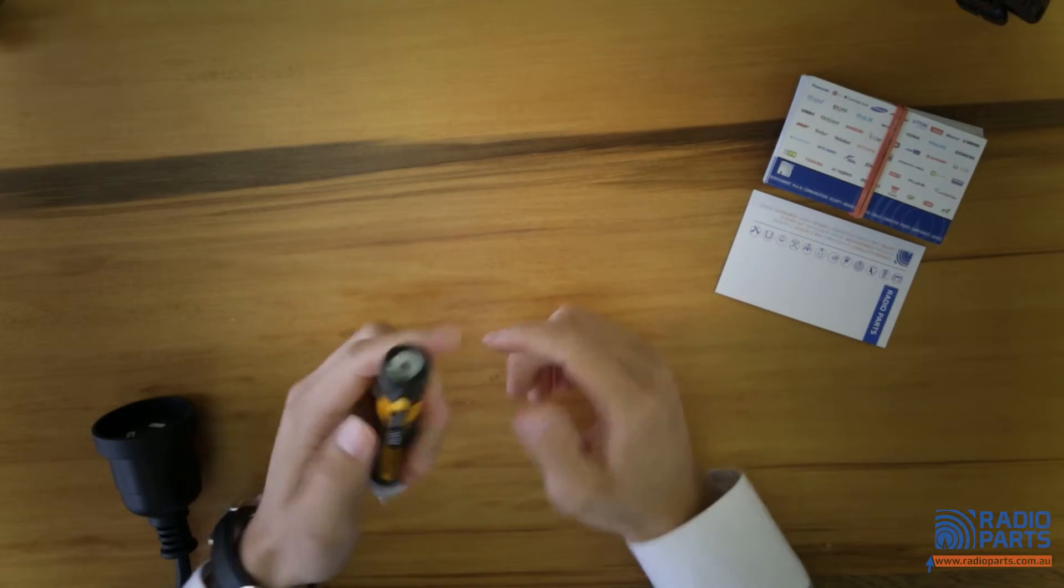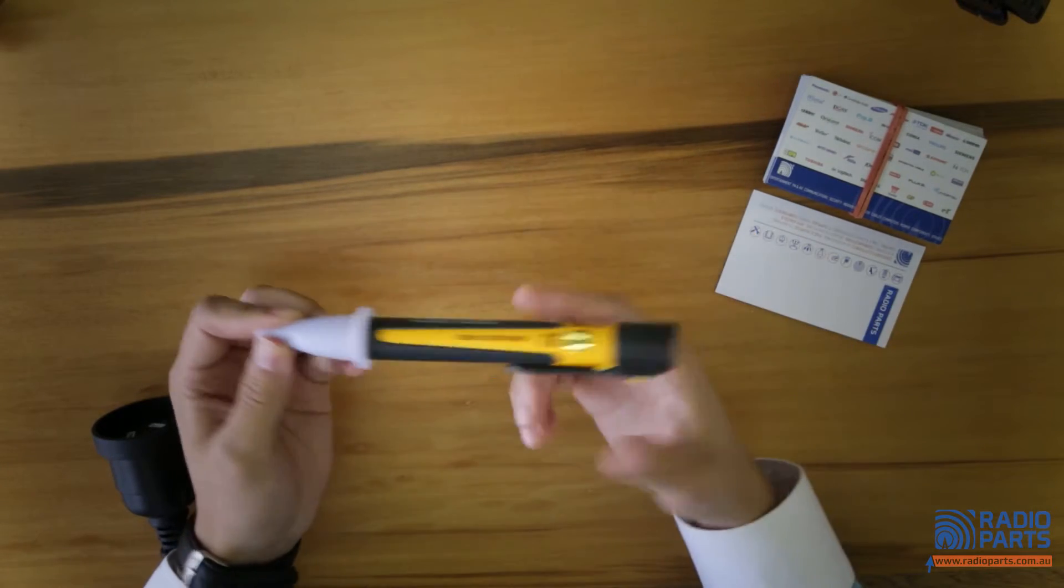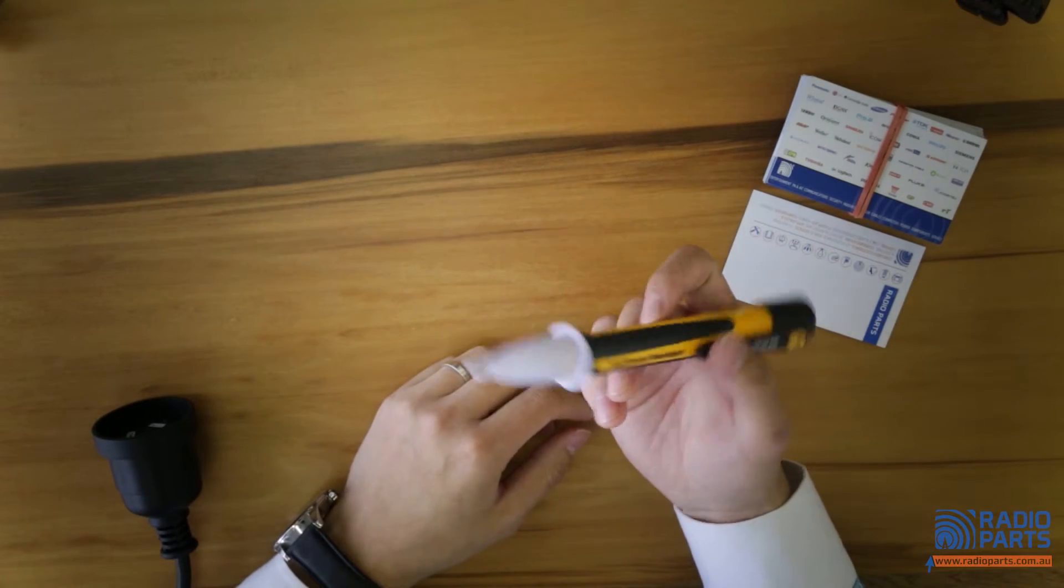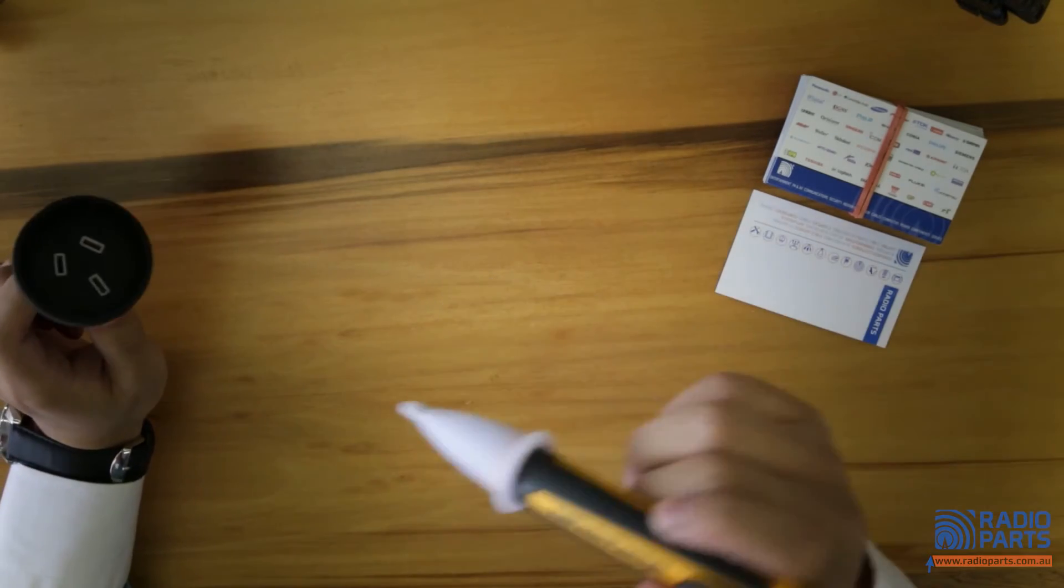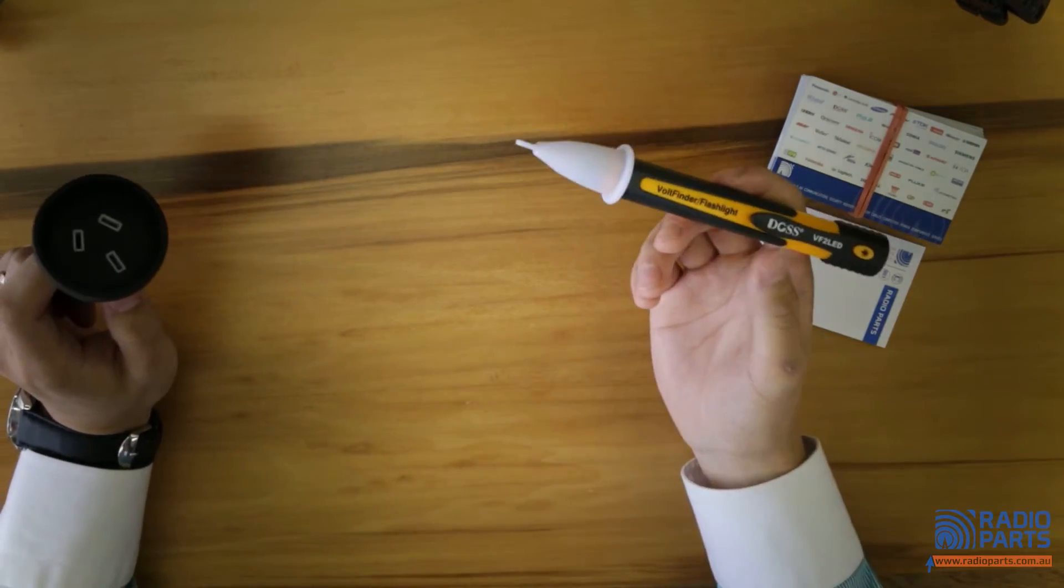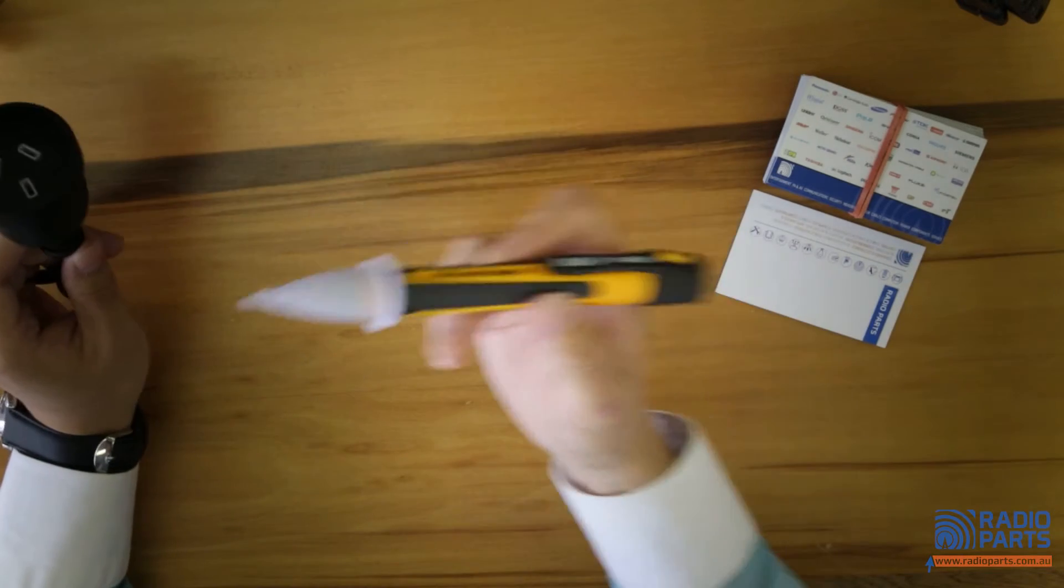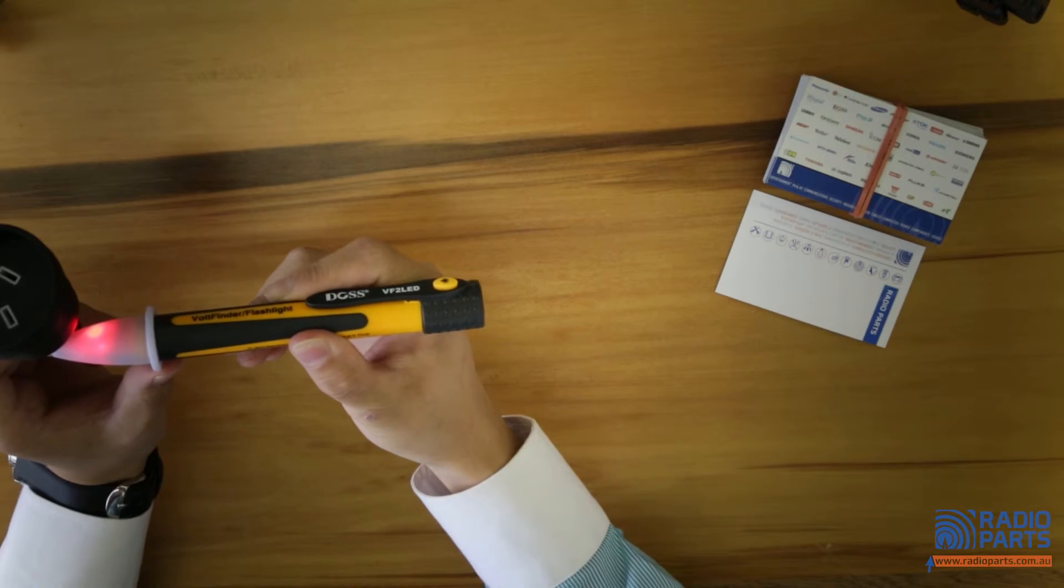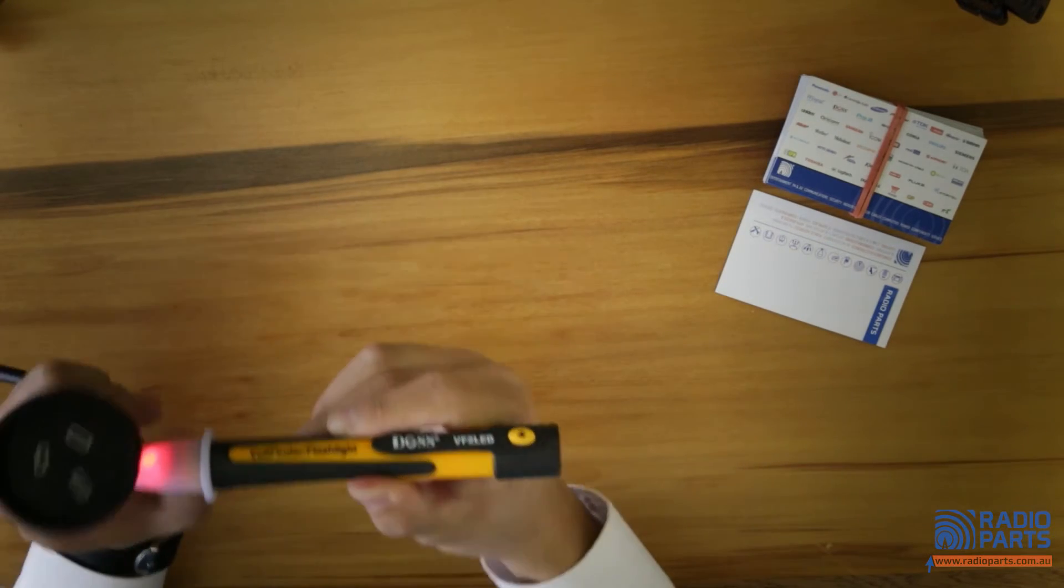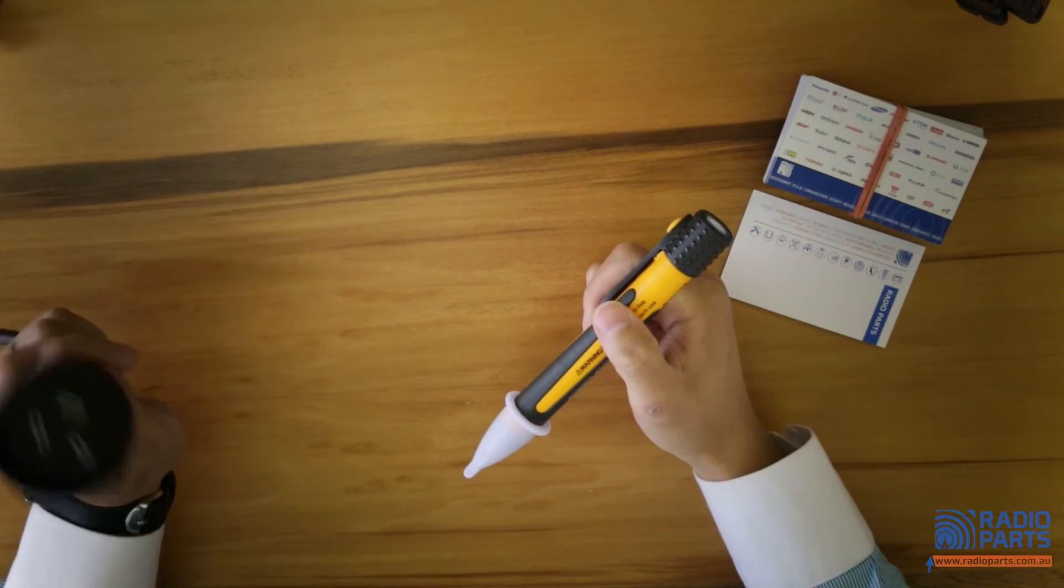Here we got the flashlight. And as a power source detector, what it does is basically you don't have to... I've got a power source here. You don't have to stick it in anymore. It's a non-contact one. So you just have to bring it close to the power source. And you can see the LED lights coming on and you should hear a beeping sound as well. And this just basically tells you the power is activated.